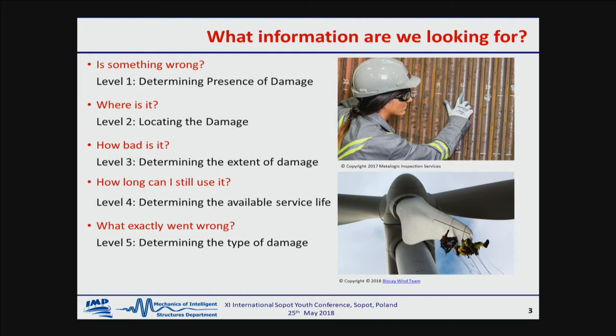Determining the presence of damage has been divided into five levels. The state of the art is probably at level 2 or level 3 — some claim to do it — but level 4 is actually what the owners are interested in; it's like the holy grail of structural health monitoring. Level 2 is locating the damage, level 3 is determining the extent of damage, and what the bridge or infrastructure owners want to know is: can I still run it or do I need to stop it? So they are interested in the available service life, and it is always handy to determine why the damage occurred in order to avoid further occurrences. Level 4 is the holy grail and this is where we want to head.